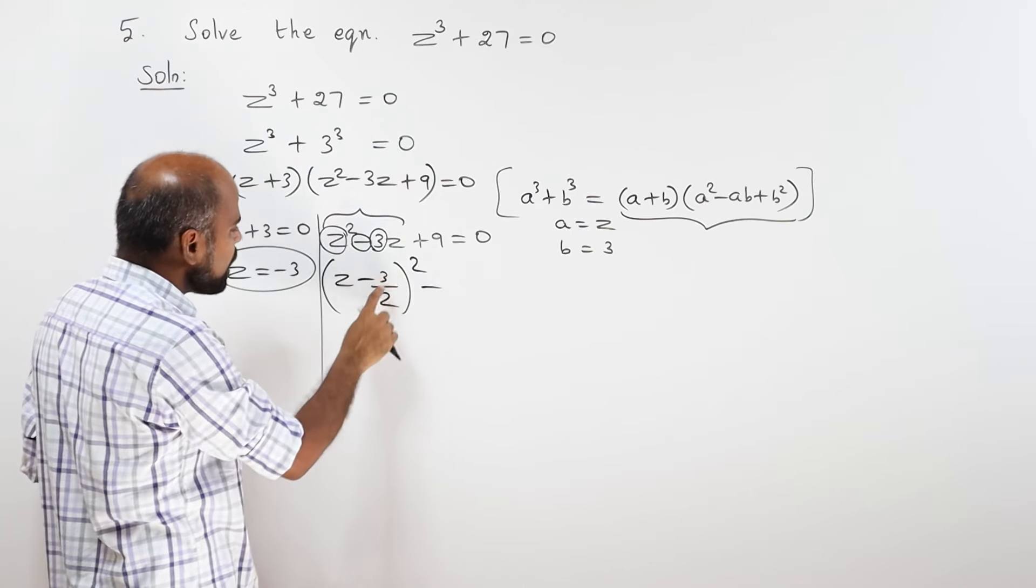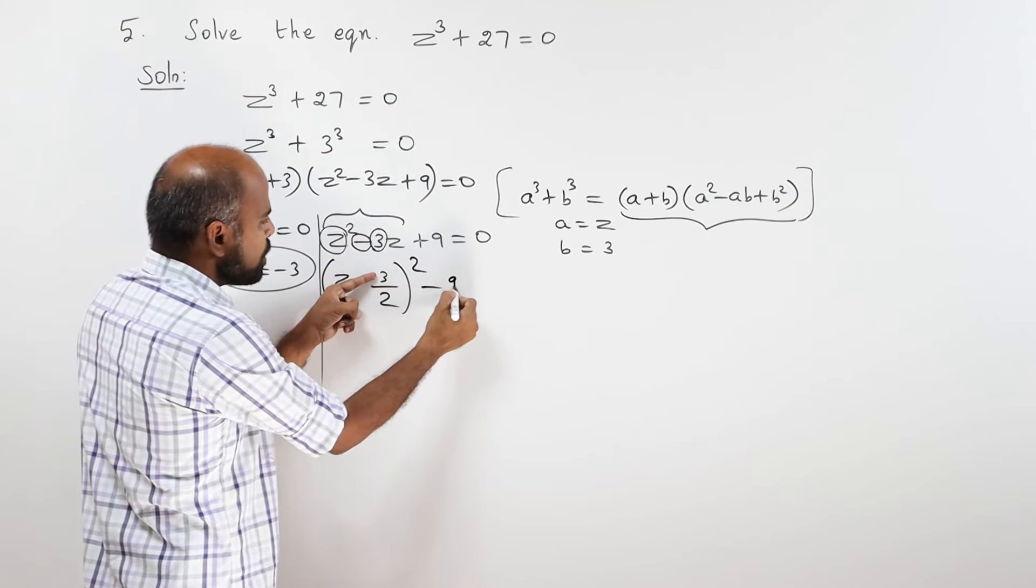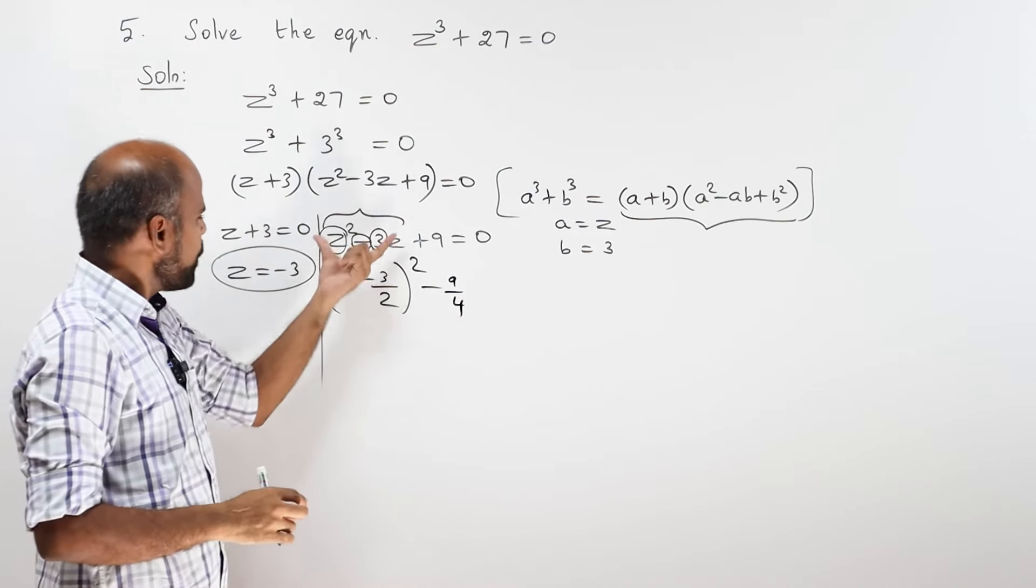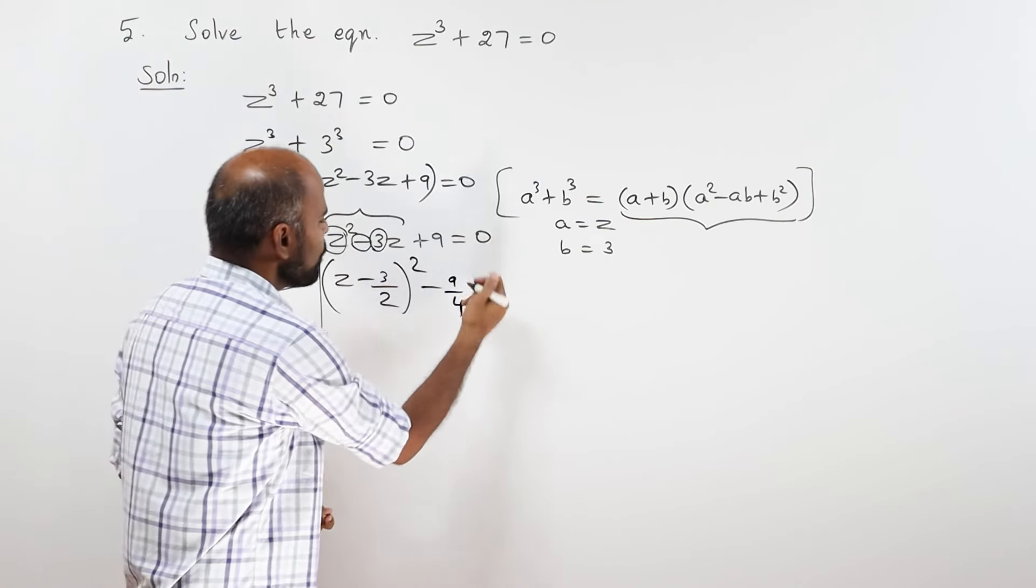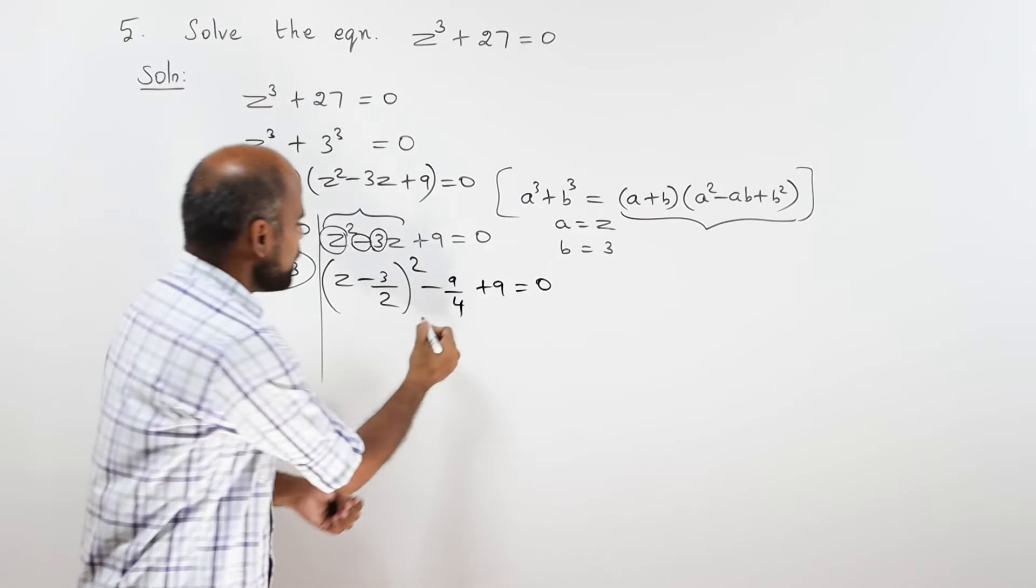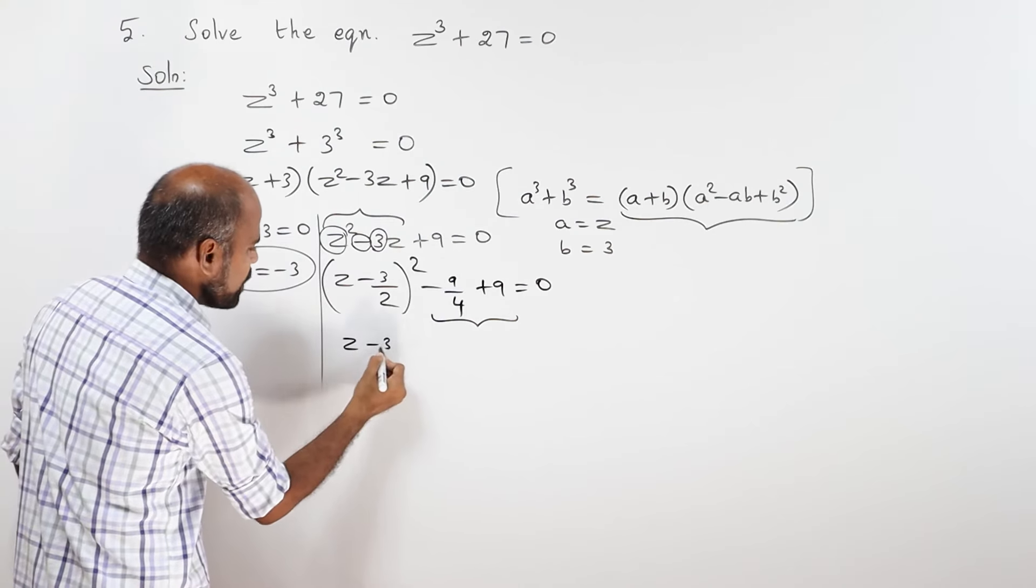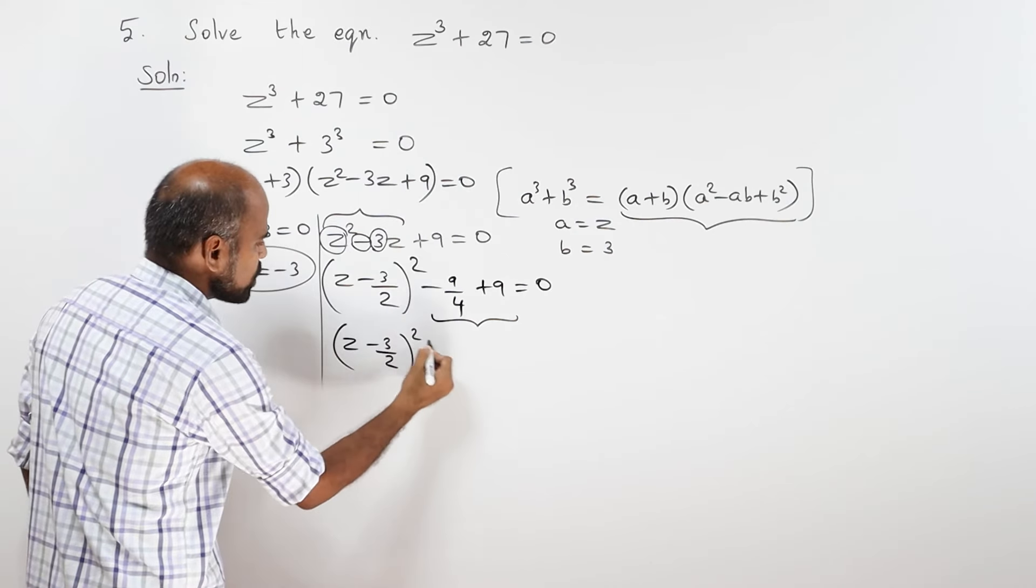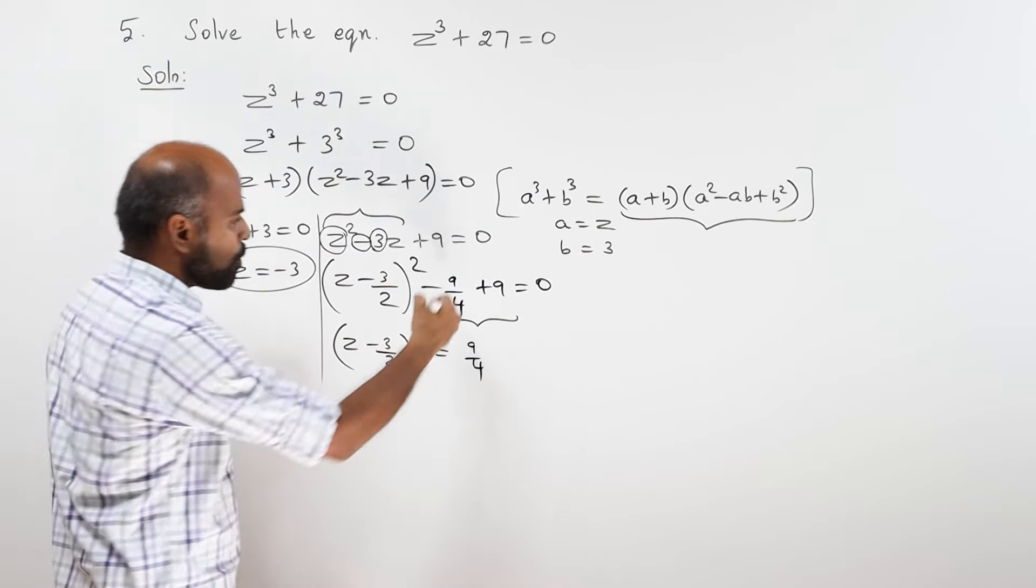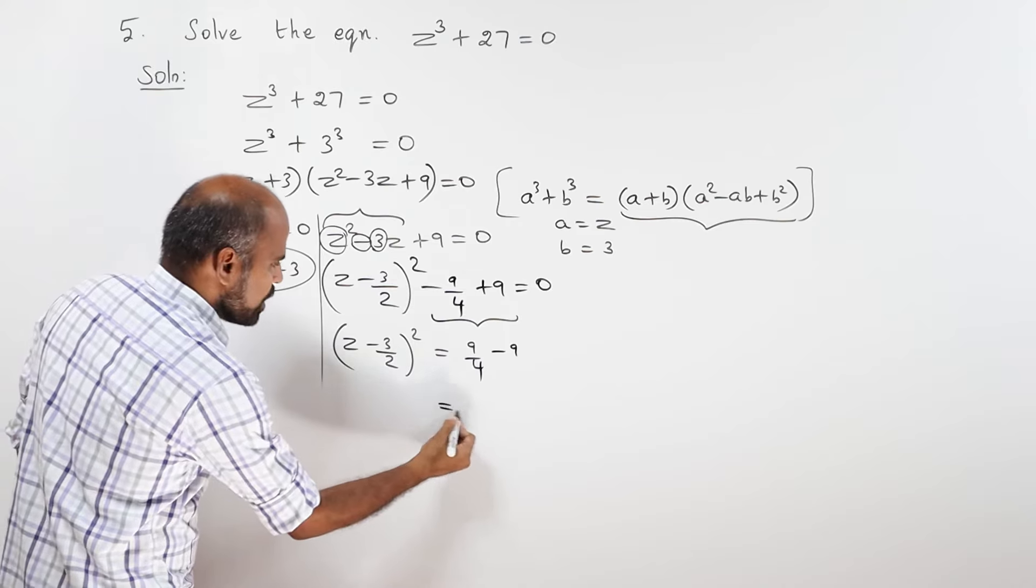That's why the number is 3 by 2. That square is 9 by 4. 3 square is 9, 2 square is 4. Now, the number is plus 9 is equal to 0. Now, the number is opposite side. Plus 9, minus 9 is equal to 1.